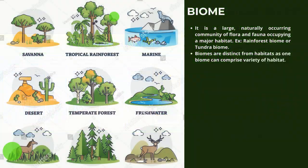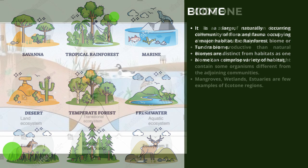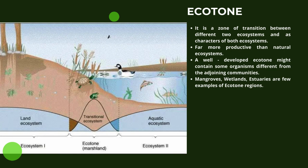Let us learn about biome. A biome is a large, naturally occurring community of flora and fauna occupying a major habitat — for example, the Rainforest Biome or Tundra Biome. Biomes are distinct from habitats, as one biome can comprise a variety of habitats.